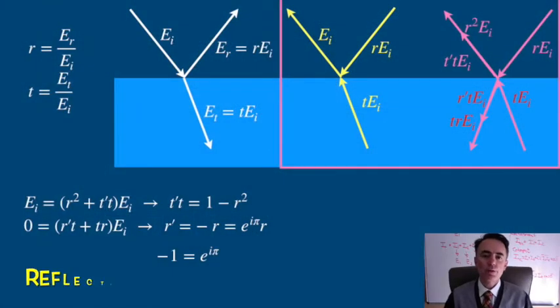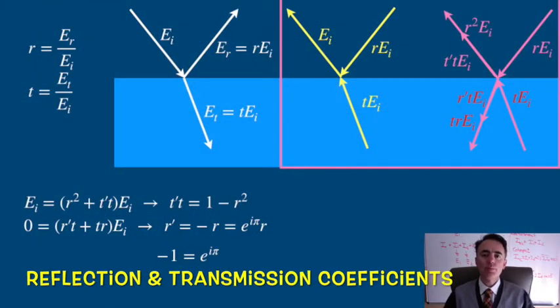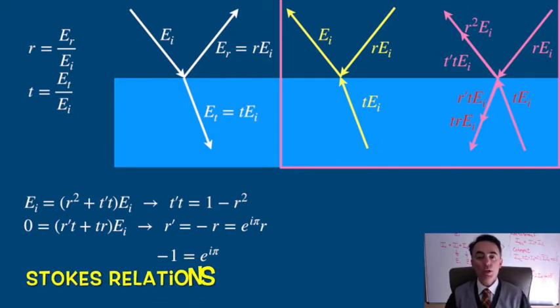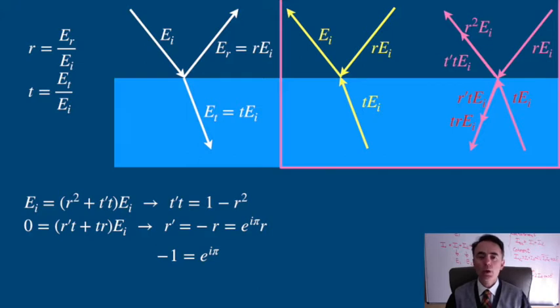We define the reflection and transmission coefficient as the ratio of the reflected and transmitted amplitudes of the electric field over the incident amplitude. We also found Stokes' relations that relate the reflection and transmission coefficients.